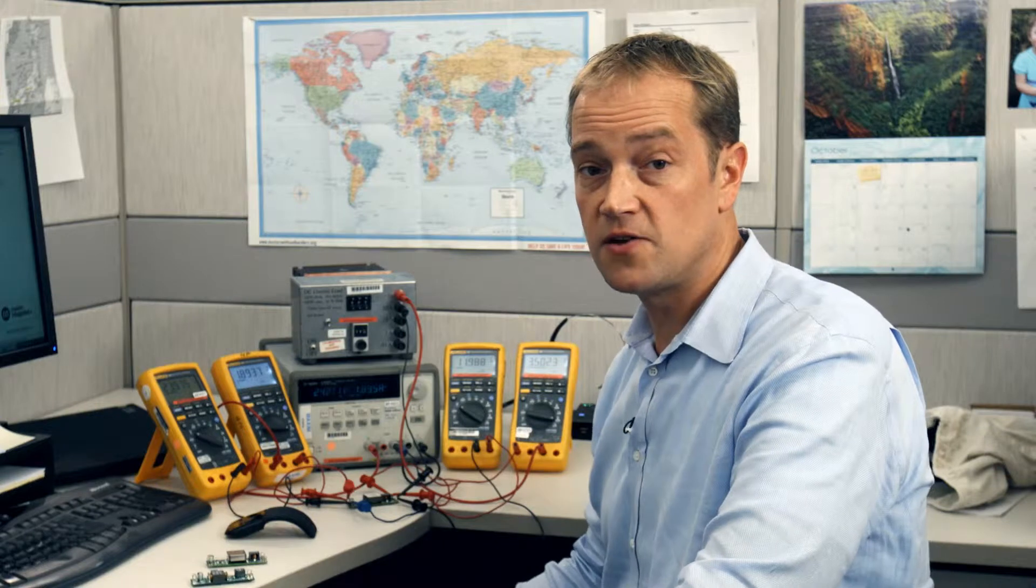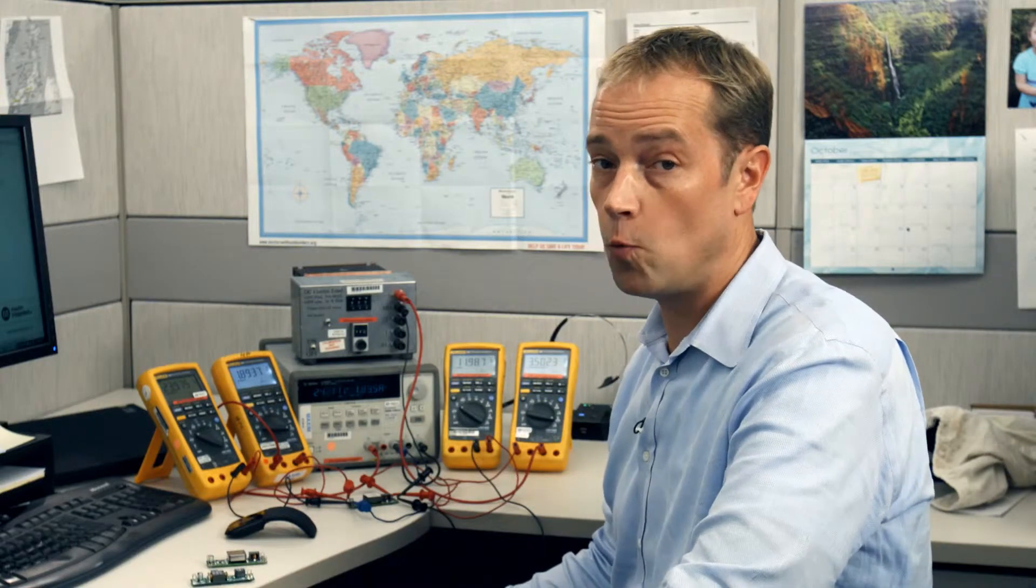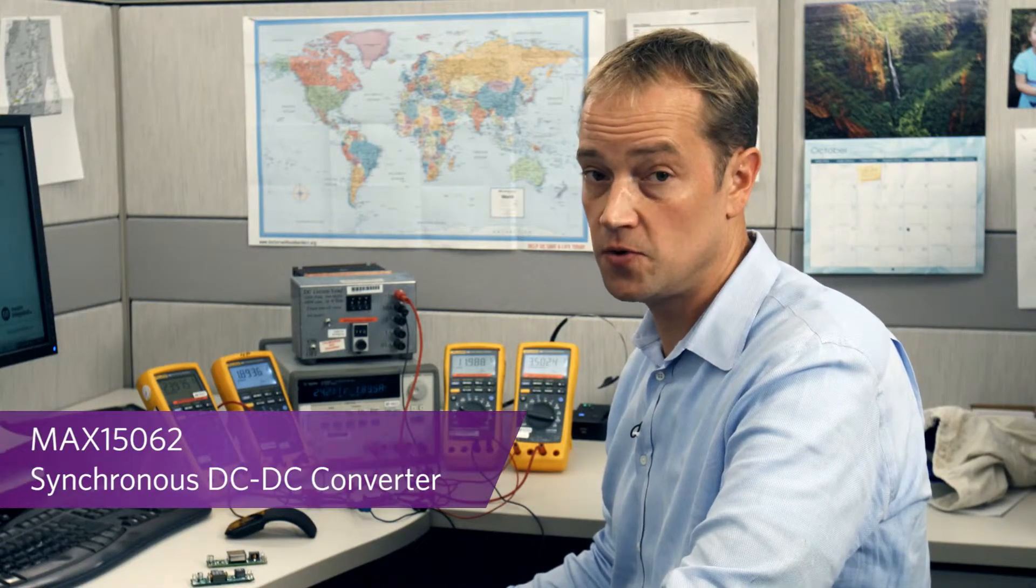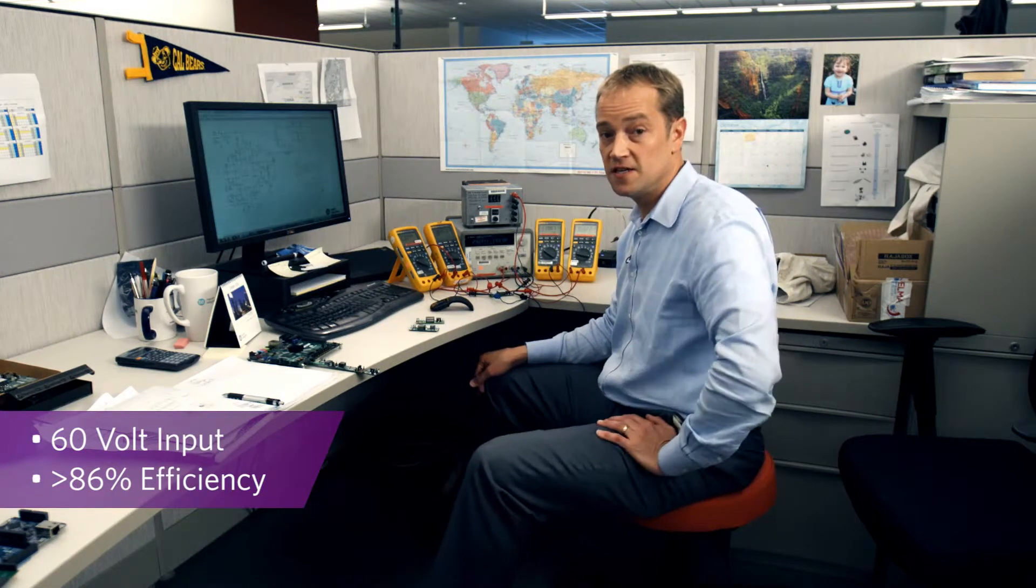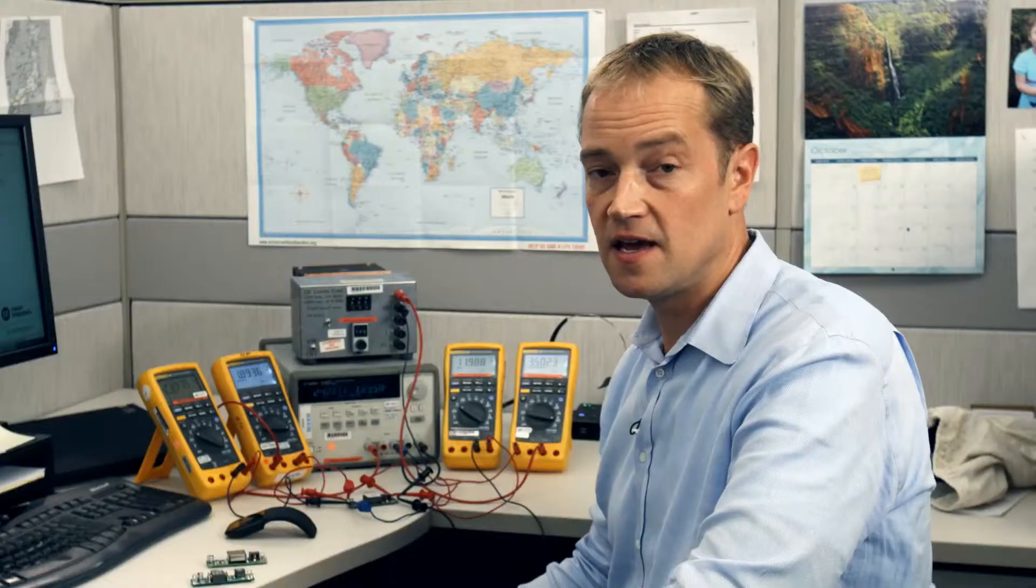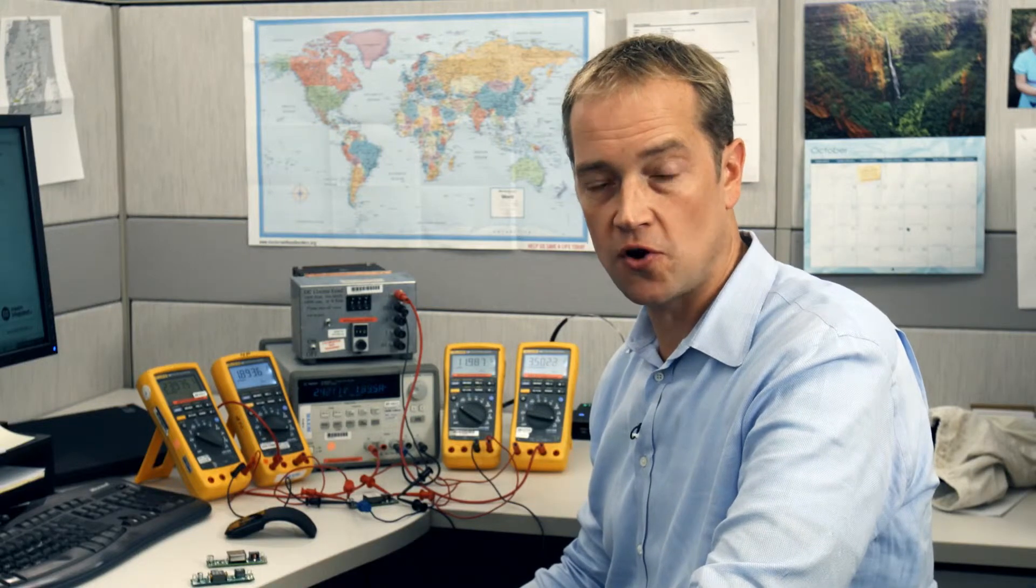The MaxRefDes 33 uses the Max15062, a synchronous DC-DC converter that takes an input voltage of 60 volts. It operates at an efficiency of above 86%, again with a broad, flat efficiency curve.